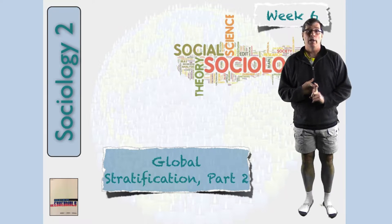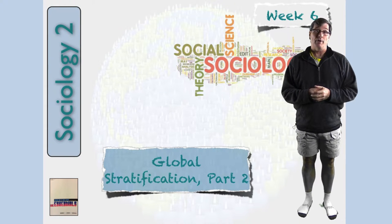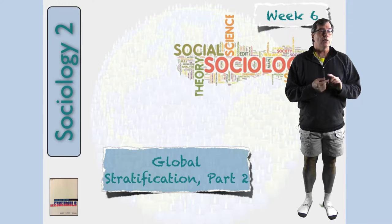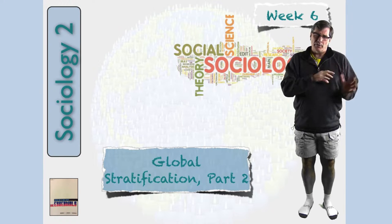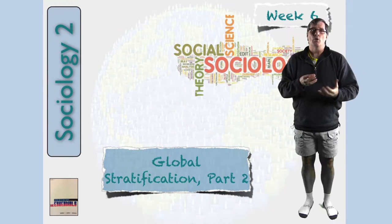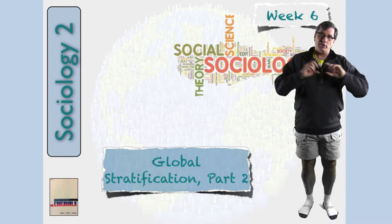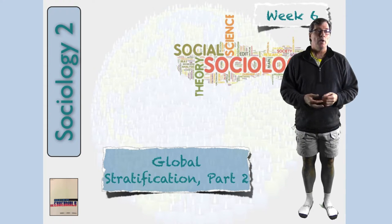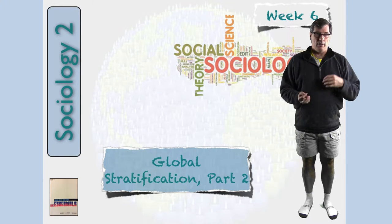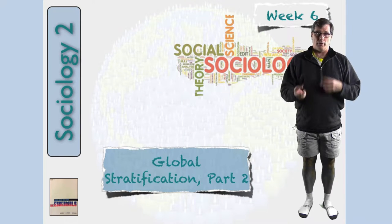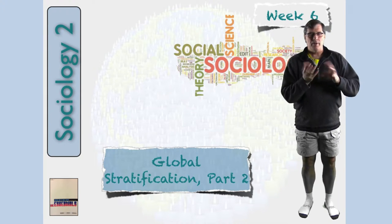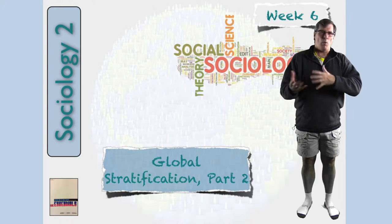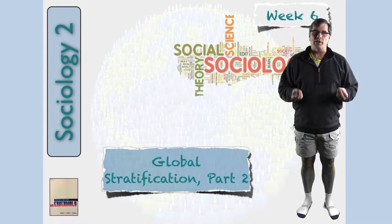Here in part two, if you haven't looked at that video, I really encourage you to go back to week five and look at it. We're going to look at global poverty and human development issues. The human development issues often come out of the WHO, the World Health Organization, through a collaborative effort among a number of countries. We're going to look at theories of global inequality and global inequality in the future — the two main areas of today's part two.